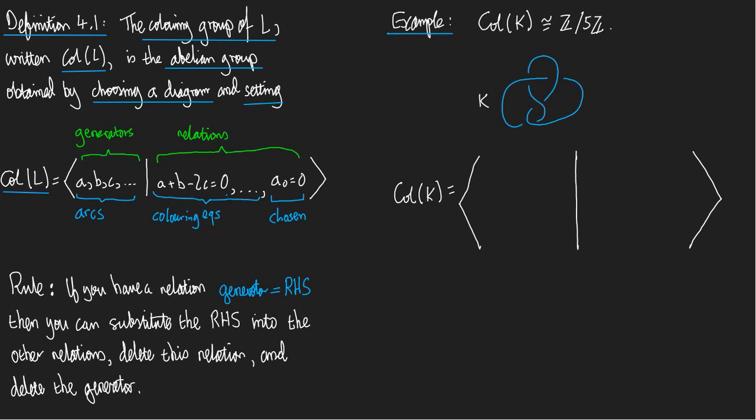But here's an example. We're going to look at the figure 8, and we're going to show that its colouring group is the integers modulo 5. This is the abelian group of integers mod 5. In other words, it's the cyclic group of order 5.